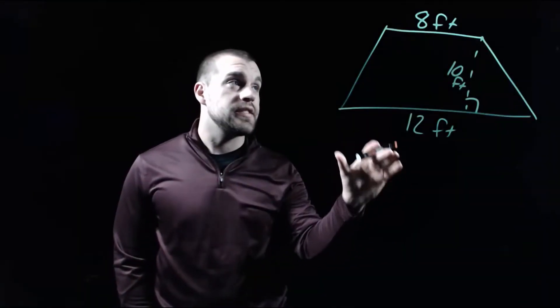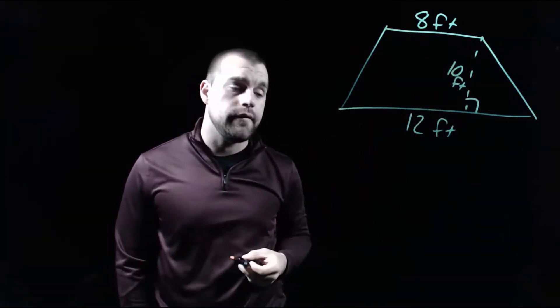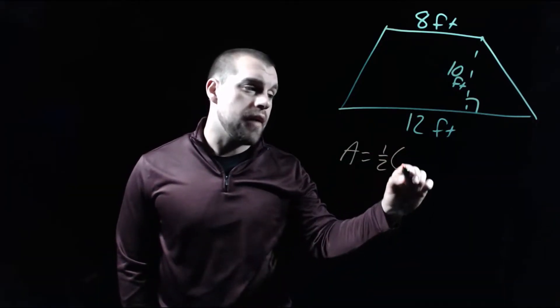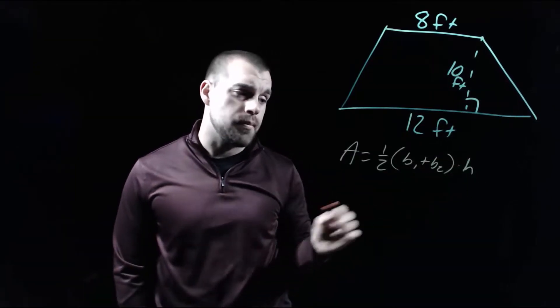So taking a look at this example, our top base is 8 feet, our bottom base is 12 feet, and then our height is 10 feet. If we're looking at our area formula, it says we're going to do one half times the sum of those two bases times the height of our trapezoid.